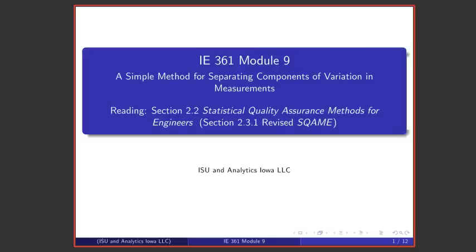Welcome to the 9th in this series of lectures on statistical quality assurance and statistical process improvement. We've been talking about measurement and using statistical methods to analyze data involving measurement error. To this point, we've used simple methods from elementary statistics. In Module 9, we're going to use a somewhat non-standard method that will lead us into separating components of variation and measurement. It's easy to understand, and should help us enter the subject with minimum confusion.